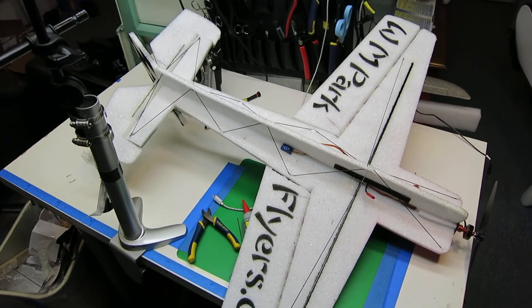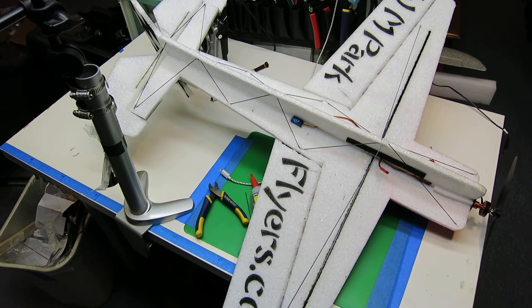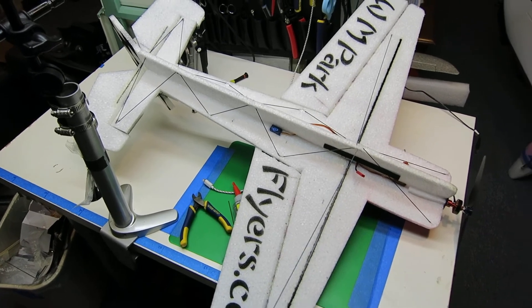My 3D Foamy had a little bit of flex, so it flew pretty well, but the tail would twist or bend in the wind.